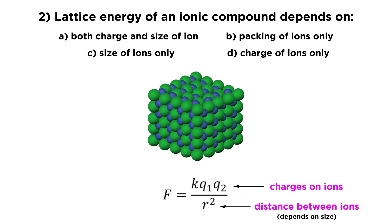R is basically the distance between the ions, which depends on their size because the ions are pressed right up against one another. If we look at the distance between ion centers, that distance increases as the ions get bigger — if the ions are bigger, their centers get farther apart. So both charge and ion size are parameters for Coulomb's law. The answer is A: lattice energy depends both on the charges — a two-plus ion gives a stronger attraction than one-plus — and on the size of the ion.